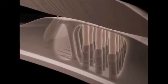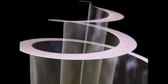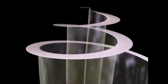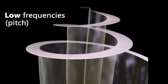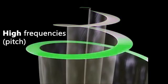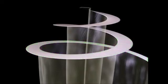The entire basilar membrane does not vibrate simultaneously. Instead, specific areas along the basilar membrane move variably in response to different frequencies of sound. Lower frequencies vibrate the basilar membrane closer to the apex of the cochlea, whereas higher frequencies produce vibrations closer to the base. This arrangement is known as tonotopic organization.